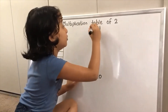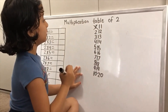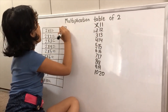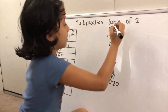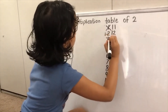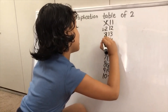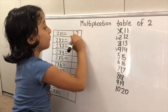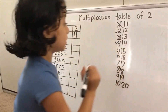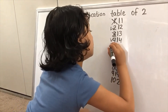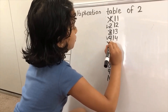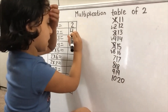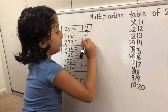This is an odd number, so don't take it. This is an even number, take it and write it. 2 times 1 equals 2. This is an odd number, so don't take it. This is an even number, so take it. So we write 2 times 2 equals 4. This is an odd number, don't take it. This is an even number, take it. So we write 2 times 3 equals 6.